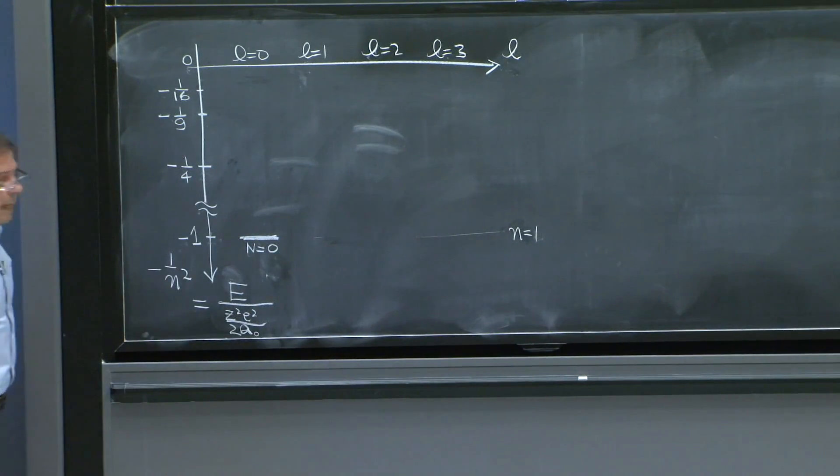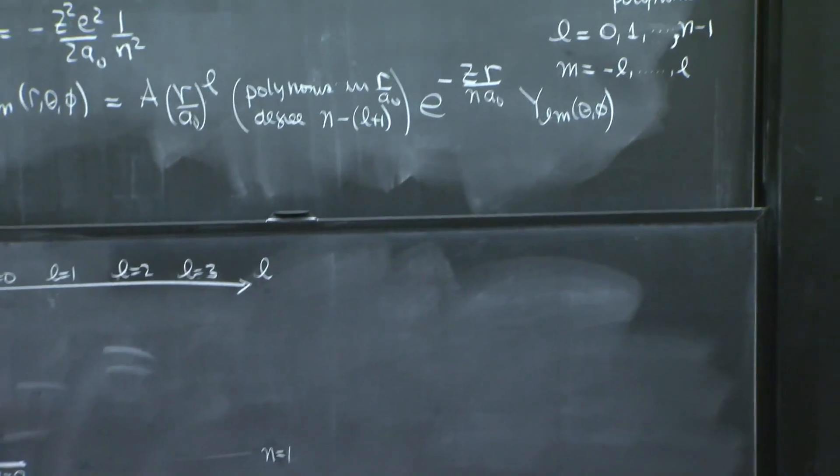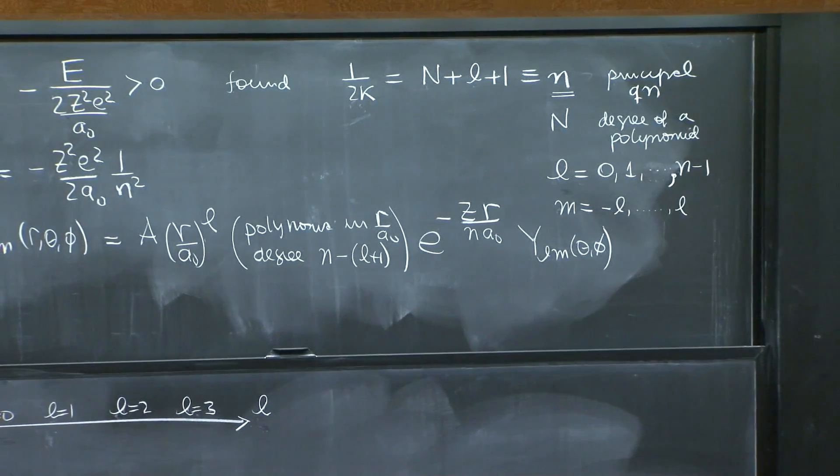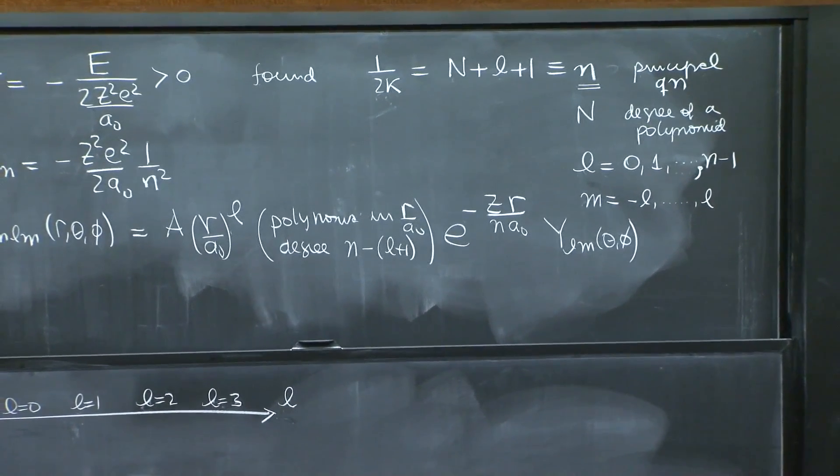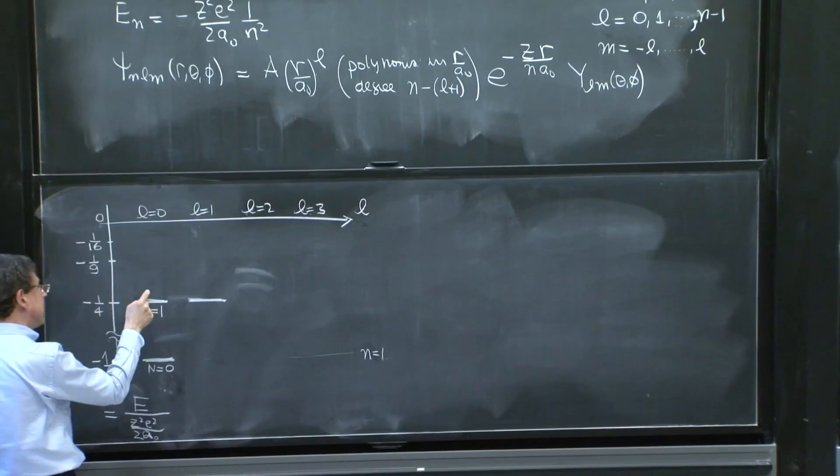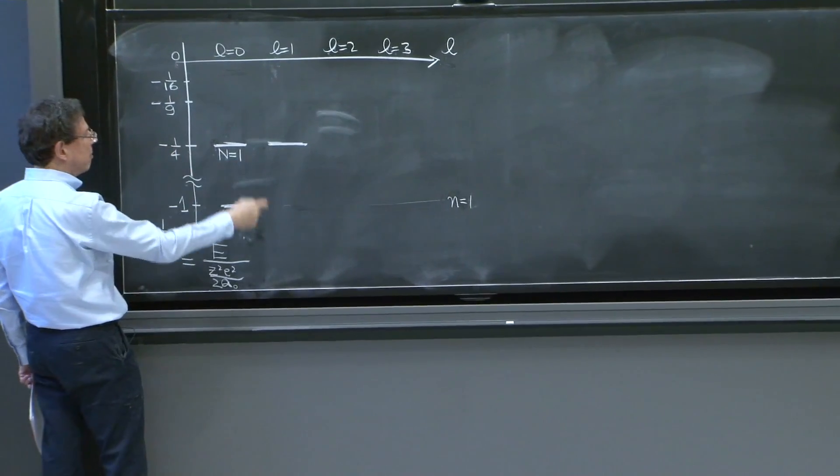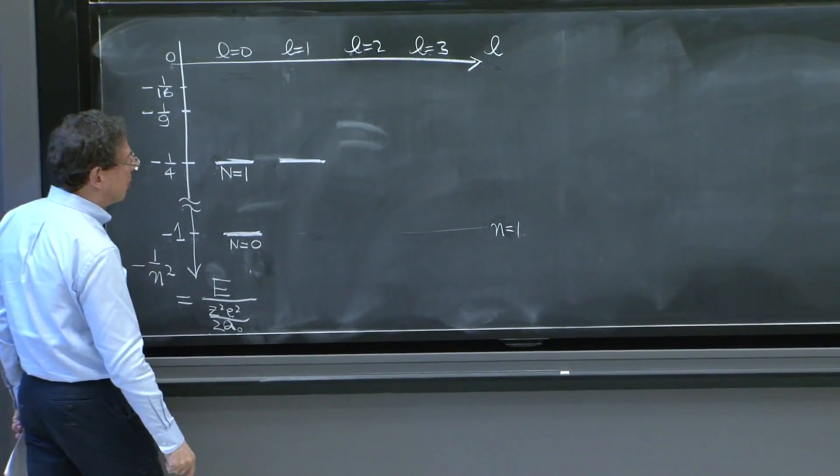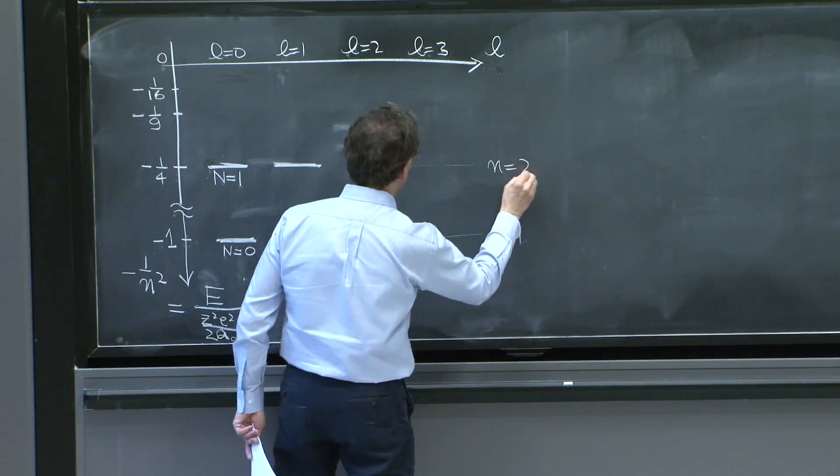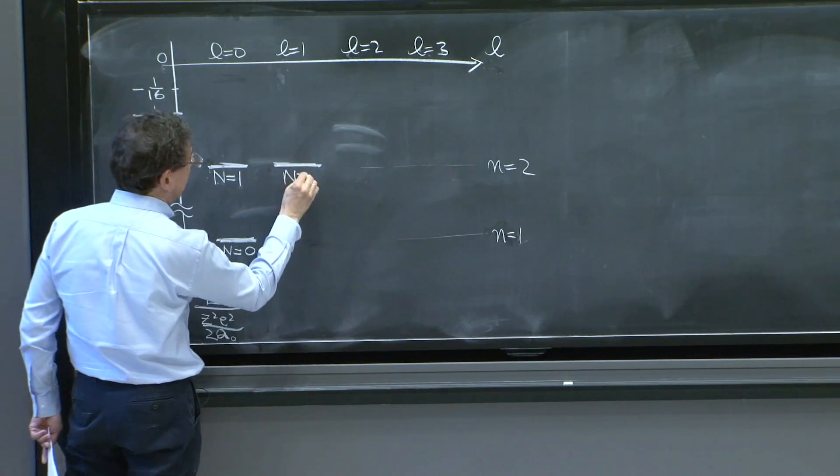Then we go to the little n equals 2 level. And when little n is equal to 2, l can be 0 or it can be 1. When l is equal to 0, capital N would have to be 1. So that capital N, which is 1, plus little l, which is 0, plus 1 is equal to 2. And this is the level n, little n equals to 2. Principal quantum number equal to 2. So here we have n equals to 2. Since l is 0, capital N is 1. And on here, you'll have capital N is equal to 0.